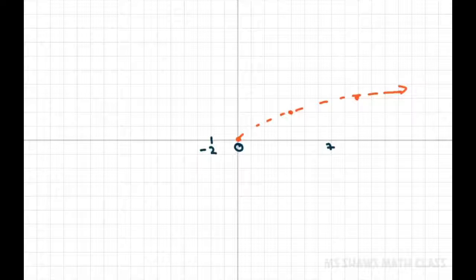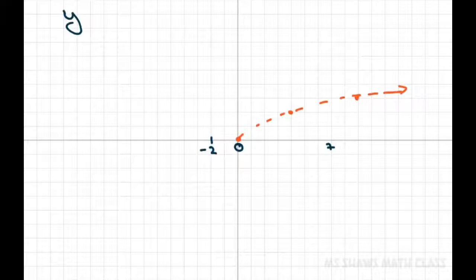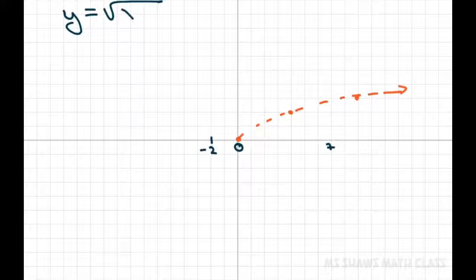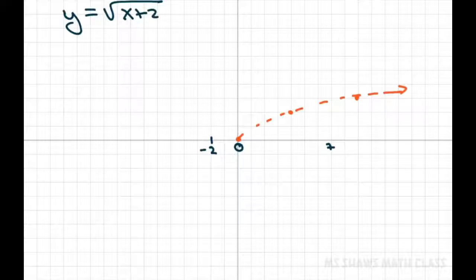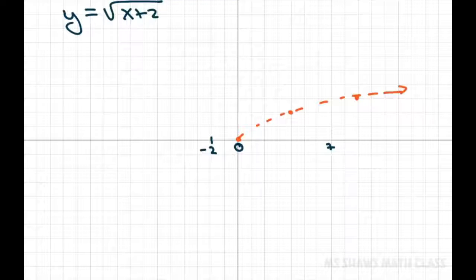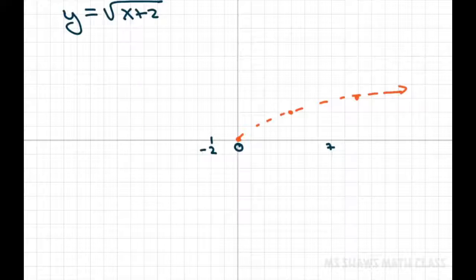And all this one did when we had y or f(x) equals square root of x plus 2 is shift the graph to the left by 2 units.